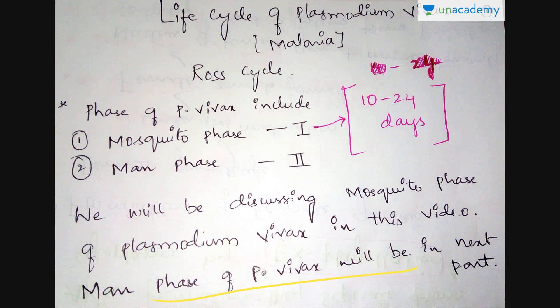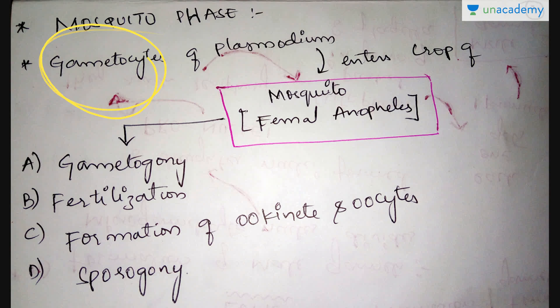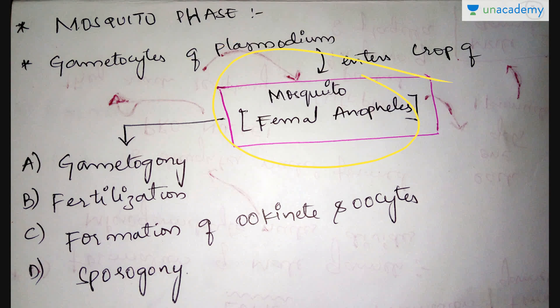Before starting the life cycle of Plasmodium vivax, we should know that this life cycle starts from 10 to 24 days after it enters the mosquito. In the mosquito phase, the initial stage of Plasmodium is called the gametocyte, where they are in the form of small gametes. They enter the crop of the female Anopheles mosquito. Here, four stages can be seen: first is gametogony, next is fertilization, third is the formation of ookinetes and oocysts, and the fourth stage is sporogony.